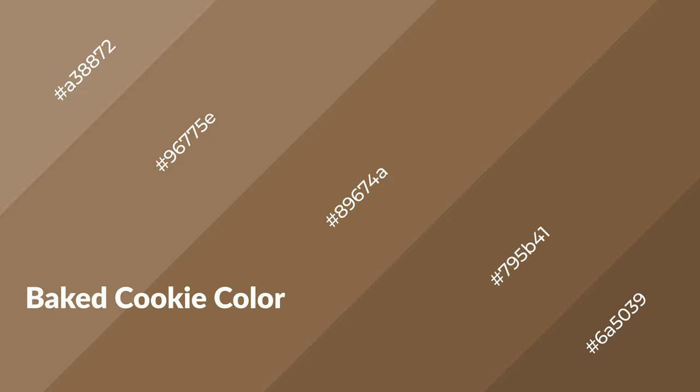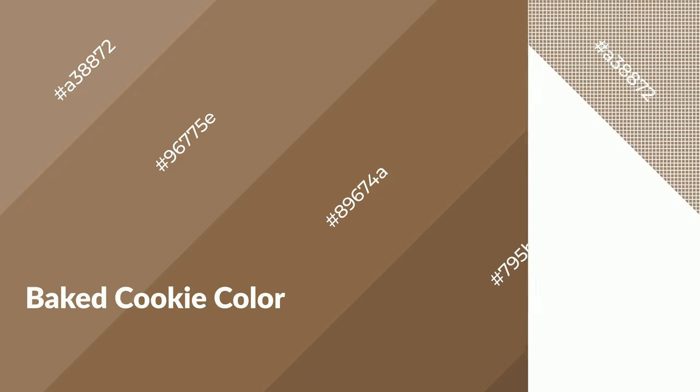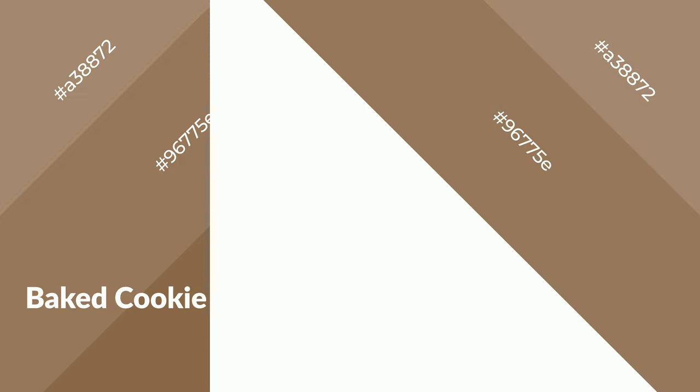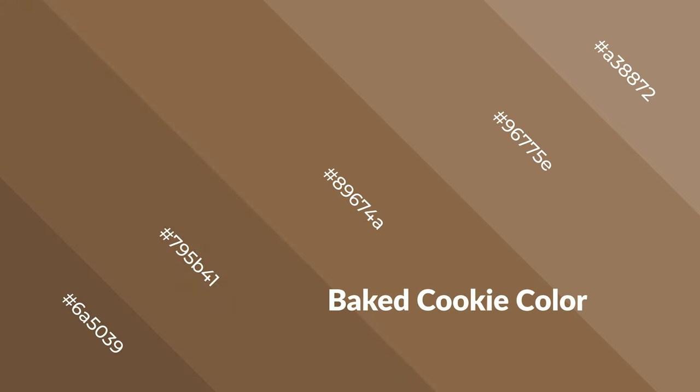Baked cookie is a warm color and it emits cozier and active emotions. Warm colors are symbols of warmth, fire, heat, and sunshine. It also evokes joy, passion, love, and even anger emotions. You can see them used in restaurants and gyms.